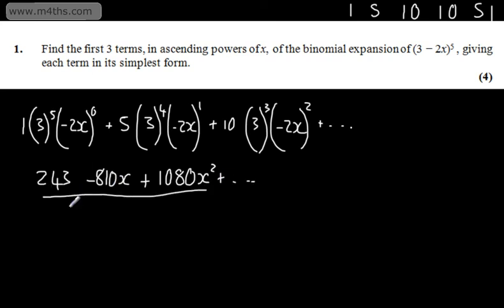You can, of course, use a calculator for that question. Final answer is 243 minus 810x plus 1080x squared. And the question carries four marks.